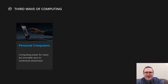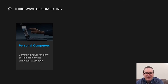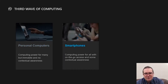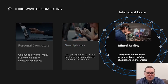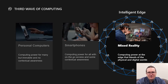Over time computing has evolved. We had personal computers which provided access to computing power to many, but they were not very mobile and they had no contextual awareness — they didn't understand what was happening in the world that surrounded the computer. We then moved to smartphones, which provided the ability to have access to compute on the go, and with different sensors embedded in your smartphone, it provided some contextual awareness. But we're now entering this third wave of computing, where we're able to take the power of the cloud, bring it down to the intelligent edge, and enable mixed reality devices.